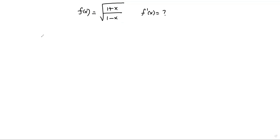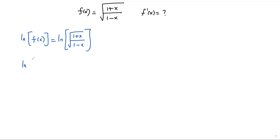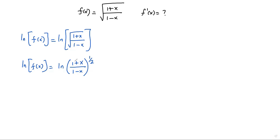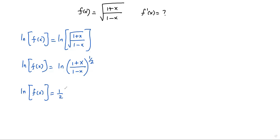Taking natural logarithm on both sides: ln(f(x)) = ln(√((1+x)/(1-x))). I can write the square root as the exponent one-half, giving ln(f(x)) = ln(((1+x)/(1-x))^(1/2)). Now applying the power rule of logarithm, I bring the exponent in front: ln(f(x)) = (1/2) · ln((1+x)/(1-x)).